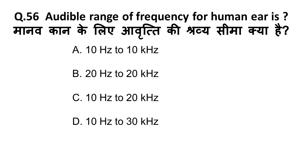Next question: what is the audible range of frequency for human ears? If the frequency is below this range you cannot hear; if above, it is harmful to your ear. The audible range of frequency for human ears is 20 Hz to 20 kHz. Sound is measured in a unit called decibel. Remember: audible range is 20 Hz to 20 kHz, and sound is measured in decibels.